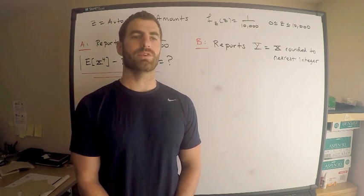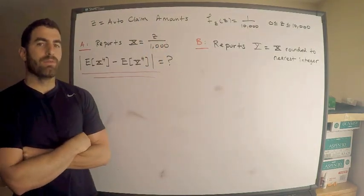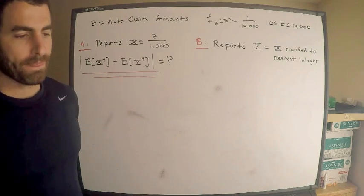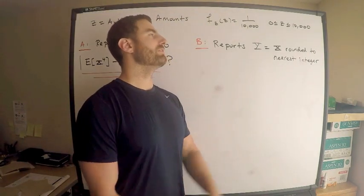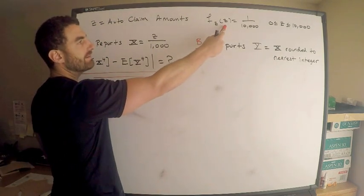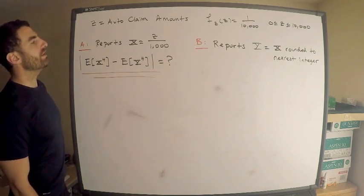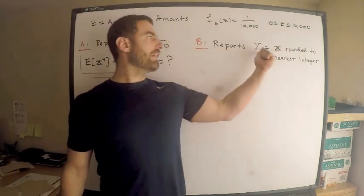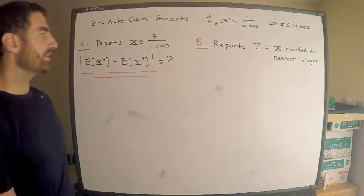Welcome to Mancinelli's Math Lab. This was a requested question, so let's cover it in this video. I'm given a random variable Z representing auto claim amounts. Z is uniformly distributed over the interval from 0 to 10,000. Since it's uniform, the probability density function is 1 over 10,000. Now, Actuary A reports claim amounts as the auto claim amount over 1,000, and Actuary B reports their claim amounts as Actuary A's claim amount rounded to the nearest integer.